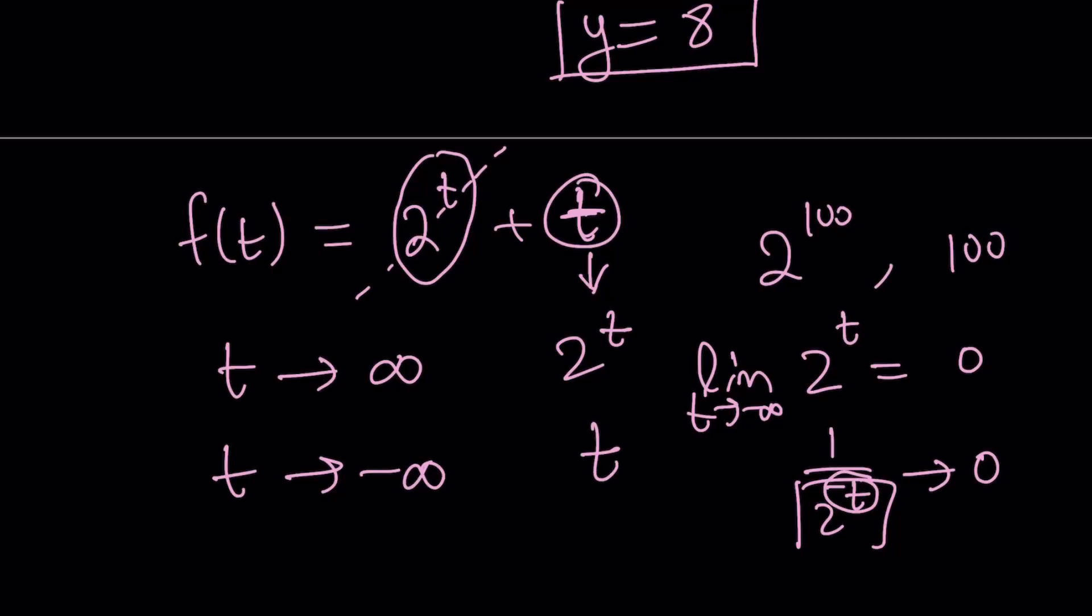Our function is going to behave like an exponential function for very large values, for very large positive values of t. And for very small negative values, it's going to behave like f of t equals t, which is the diagonal.